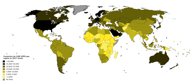The GDP adjusted for changes in money value in this way is called the real, or constant, GDP. The factor used to convert GDP from current to constant values is called the GDP deflator. Unlike the Consumer Price Index, which measures inflation or deflation in the price of household consumer goods, the GDP deflator measures changes in the prices of all domestically produced goods and services in an economy, including investment goods, government services, and household consumption goods. Constant GDP figures allow us to calculate a GDP growth rate, which indicates how much a country's production has increased compared to the previous year.